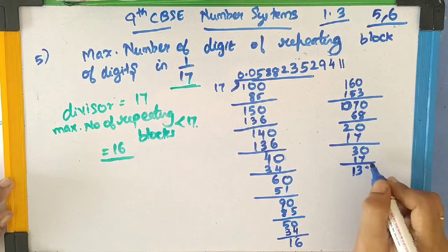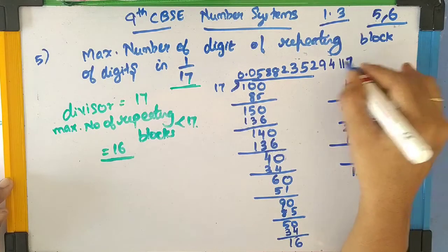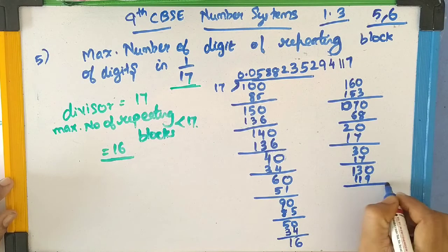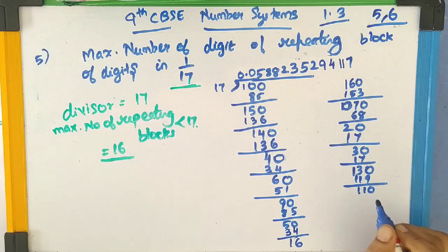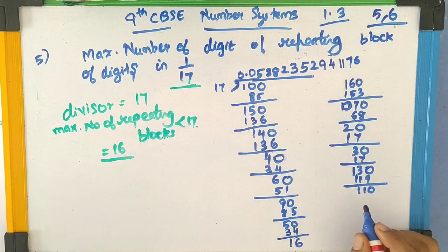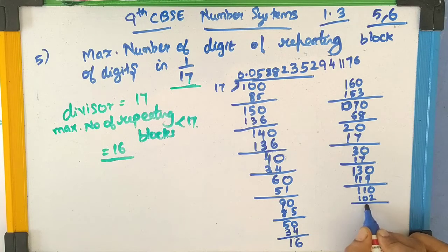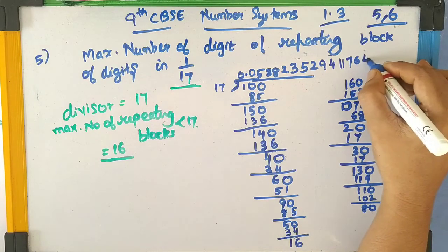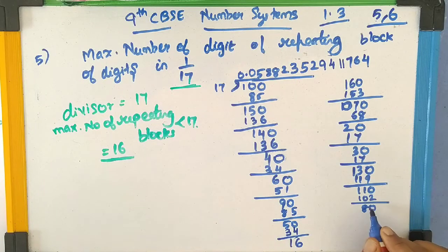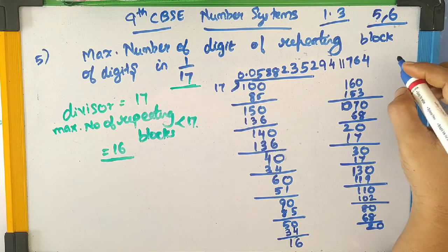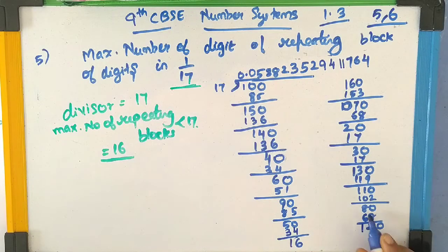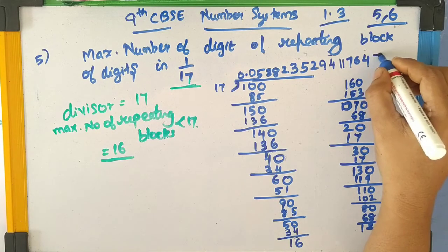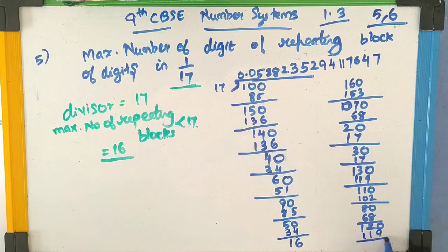The remainder is still not equal to 1. Now 6 17s are 102, remainder is 8. Still not equal to 1. Adding a 0, now 4 17s are 68, remainder is 0. Adding a 0, 1 17 is 17 — I'm sorry, it is 12. Adding a 0, I place 7 in the quotient area. 7 into 17 is 119. At last I got the remainder 1, which is the same as the numerator. That is very important.